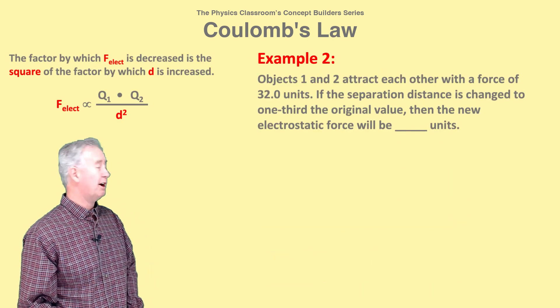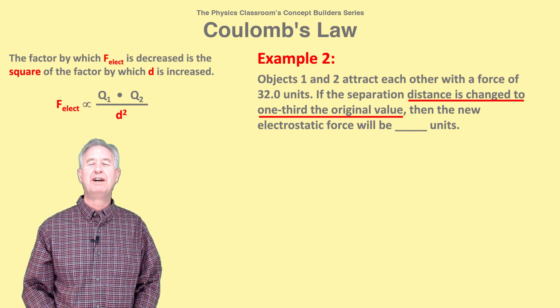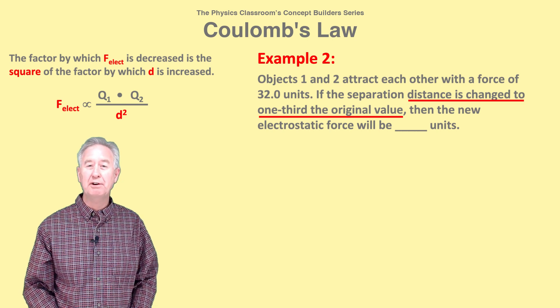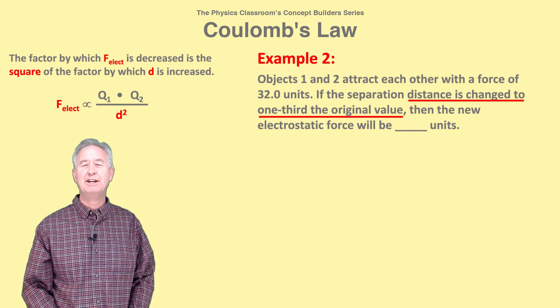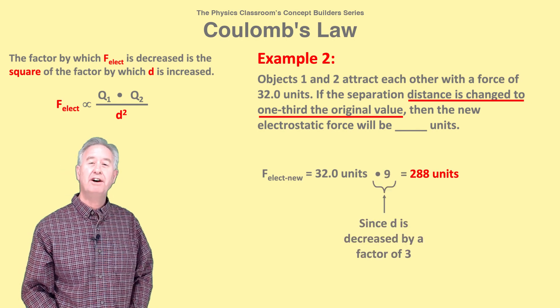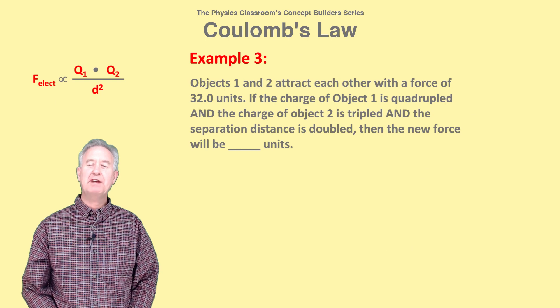In example 2, the value of d is changed to one-third of the original value. Since d decreases by a factor of 3, F is increased by a factor of 9. So to determine the new force, take the original force of 32 units and multiply it by 9.